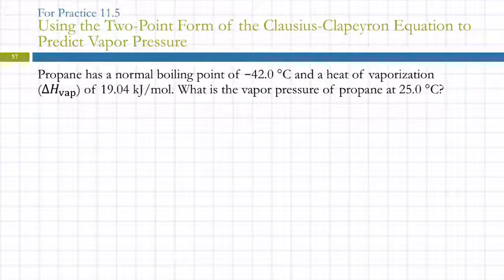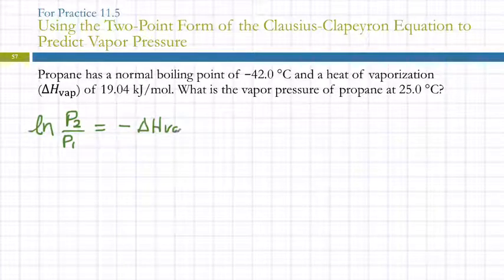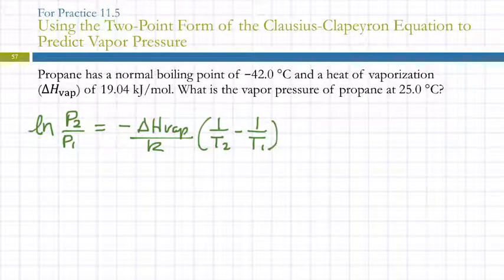So it would be a problem like this. Propane has a normal boiling point of minus 42 degrees Celsius and a heat of vaporization of 19.04 kilojoules per mole. What's the vapor pressure of propane at 25 degrees Celsius? Well, we need that two-point form of the equation. So the natural log of P2 over P1 is equal to negative delta H vaporization over R, 1 over T2 minus 1 over T1. Temperatures have to be in Kelvin. We don't want any negative temperatures in here, and we can't deal with anything that's zero. So we do have two temperatures here, minus 42 and 25, but they're both in Celsius, and so we need to convert them to Kelvin.